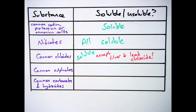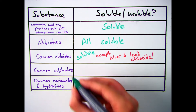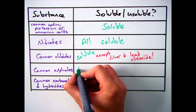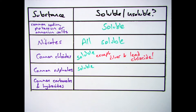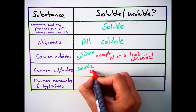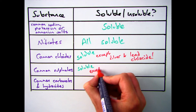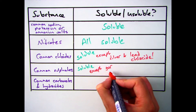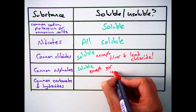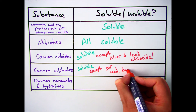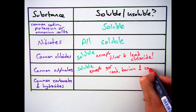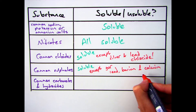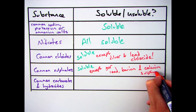If we move on to common sulfates, the majority of sulfates you'll come across are going to be soluble, but there are three exceptions you need to know, which are lead, barium and calcium. So lead sulfate, barium sulfate and calcium sulfate are the three that are insoluble and will form a precipitate.